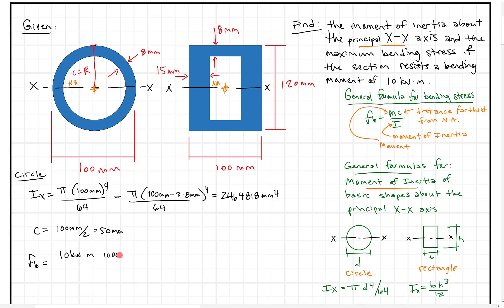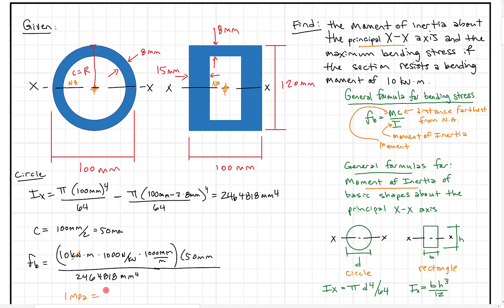To get MPa in the end, I'll multiply by 1000 N/kN and 1000 mm/m. So the full expression is: 10 kN·m × 1000 N/kN × 1000 mm/m × 50 mm, all divided by 2,464,818 mm⁴. Checking units: N × mm × mm / mm⁴ = N/mm², which equals MPa. When we solve this, we get approximately 203 MPa.